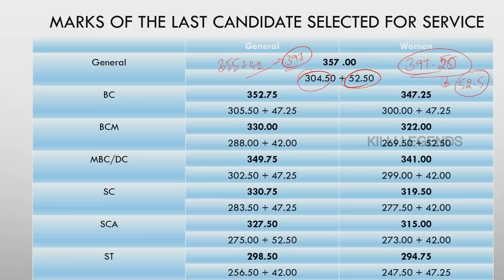If you look at this particular candidate first time, the highest mark is 355 — that's what we said in a preliminary strategy video. The highest mark is 397.5. If you look at the general mark, you look at the individual category — the marks are different. For BC, it is 352.75, and it is 347.25.